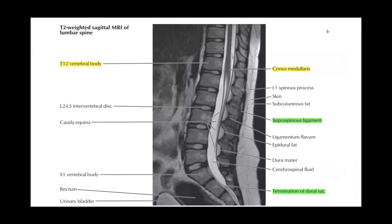Let's start with this image. This is an MRI — a sagittal plane MRI film of part of the spinal cord and the vertebra. This is a T2 sagittal MRI of the lumbar spine. Within this MRI image, we can see part of the spinal cord — specifically the terminal part, the lower thoracic and lumbar parts. This is the conus medullaris, which is the terminal part of the spinal cord.